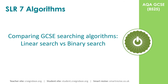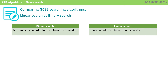So just before we end this video, we're going to compare the two GCSE searching algorithms: the linear search and the binary search. With a binary search, the items have to be in order for the algorithm to work, which means if they're not in order, you first have to perform some form of sorting algorithm before you could even start a binary search. With a linear search, the items do not need to be in any order at all, so it can start immediately with an unsorted list.